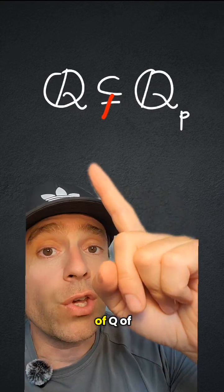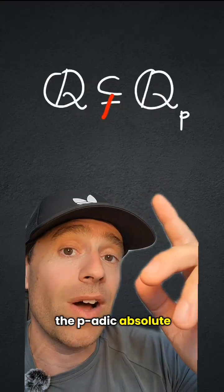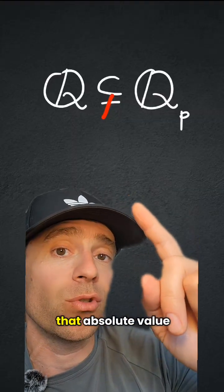The p-adic numbers are a completion of Q, of the rational numbers, with respect to what we call the p-adic absolute value. But how do we know that Q is not complete with respect to that absolute value?